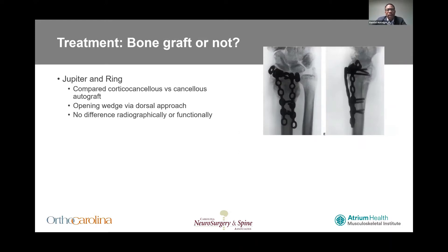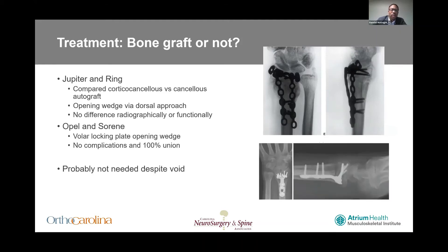Opening wedge osteotomy is simple and within most orthopedic surgeons' wheelhouse, with good outcomes of 80 to 95% of motion on the contralateral side and the ability to correct radial shortening. Regarding bone graft in opening wedge osteotomies, Jupiter and Ring found no differences between cortical versus cancellous autograft radiographically or functionally. Opal and Serene looked at opening wedge osteotomies with a volar plate and no bone graft at all and found no complications and 100% union — so you probably don't need bone graft, especially if you use a volar locking plate.